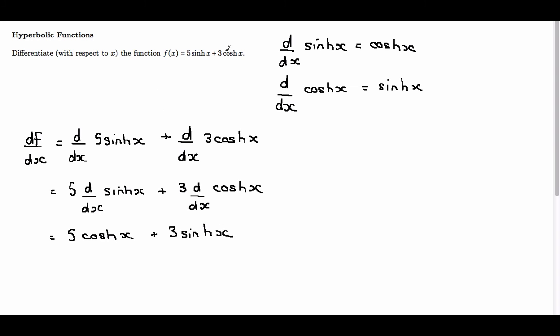Therefore, we have found the derivative of 5 sinh x plus 3 cosh x to be 5 cosh x plus 3 sinh x.